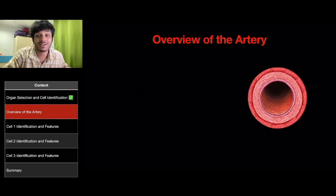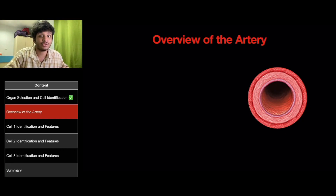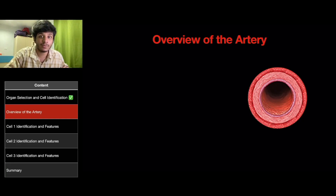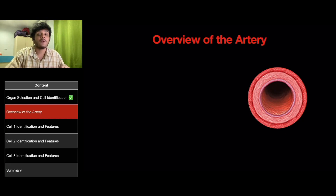So what is an artery? An artery is a blood vessel in humans and most animals that takes blood away from the heart to one or more parts of the body, such as the tissues, lungs, brain, and so on. Most arteries carry oxygenated blood. The two exceptions are the pulmonary and the umbilical arteries, which carry deoxygenated blood to the organs that oxygenate it, which are the lungs and the placenta respectively.